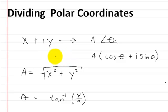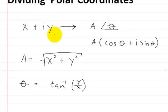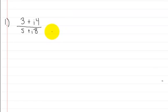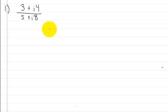This is a quick recap. I'm going to show you how to convert imaginary values into polar coordinates again. Let's start with this value right here. We have (3 + i4) divided by (5 + i8).